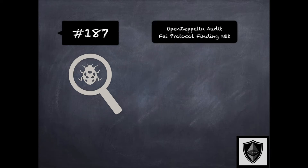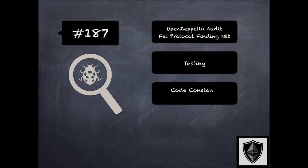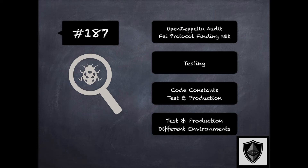Finding 187 is another finding from OpenZeppelin's audit of FAE protocol, where the concern was about test and production constants being in the same code base. For example, the core orchestrated contract defined the test mode boolean variable, which was then used to define several other test constants in the system. This decreased the legibility of the production code and made the system's integral values more error-prone. The recommendation was to consider having different environments for production and testing with different contracts. This is related to tests in 155 and configuration issues in 165 of the security pitfalls and best practices 201 module.